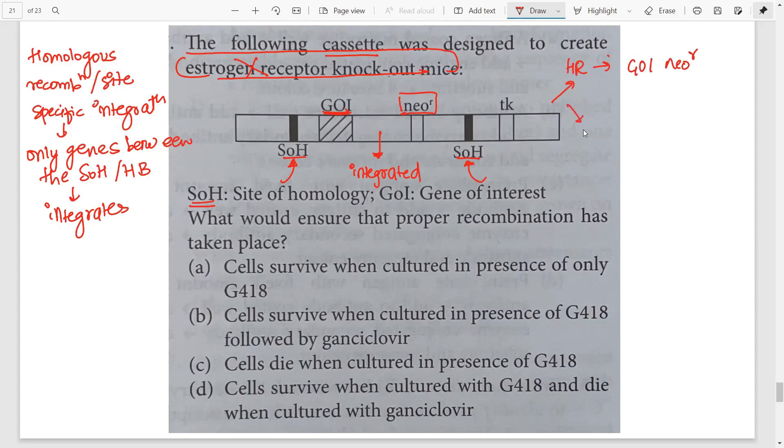Now if there is not site specific recombination, if it integrates at any improper place, then you will have all of this. All of this means you will have the gene of interest, neomycin, as well as the TK because the recombination must have taken place at some position other than these. Now what they are asking you is what would ensure proper recombination has taken place?